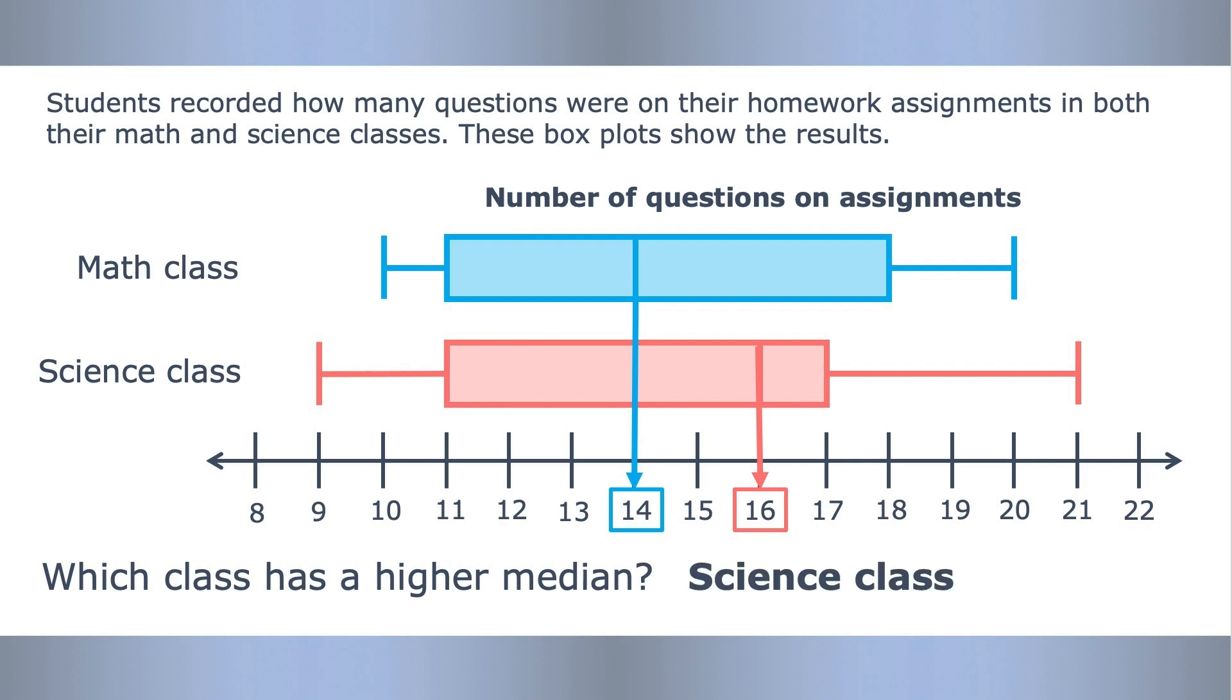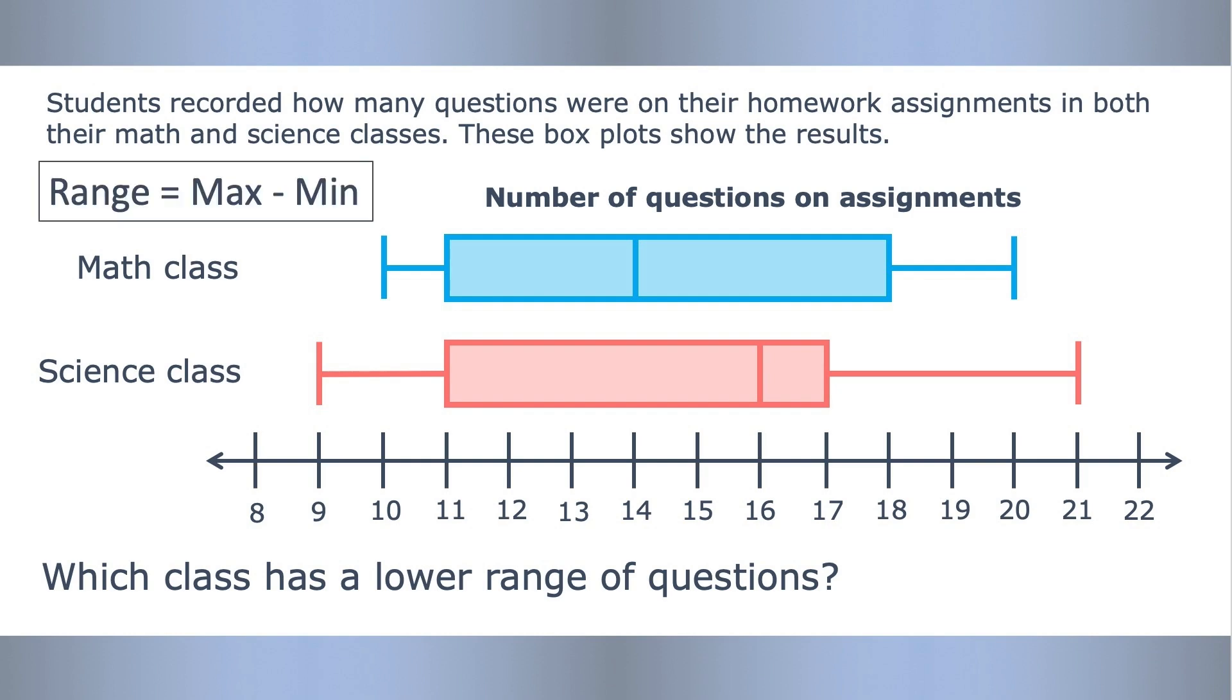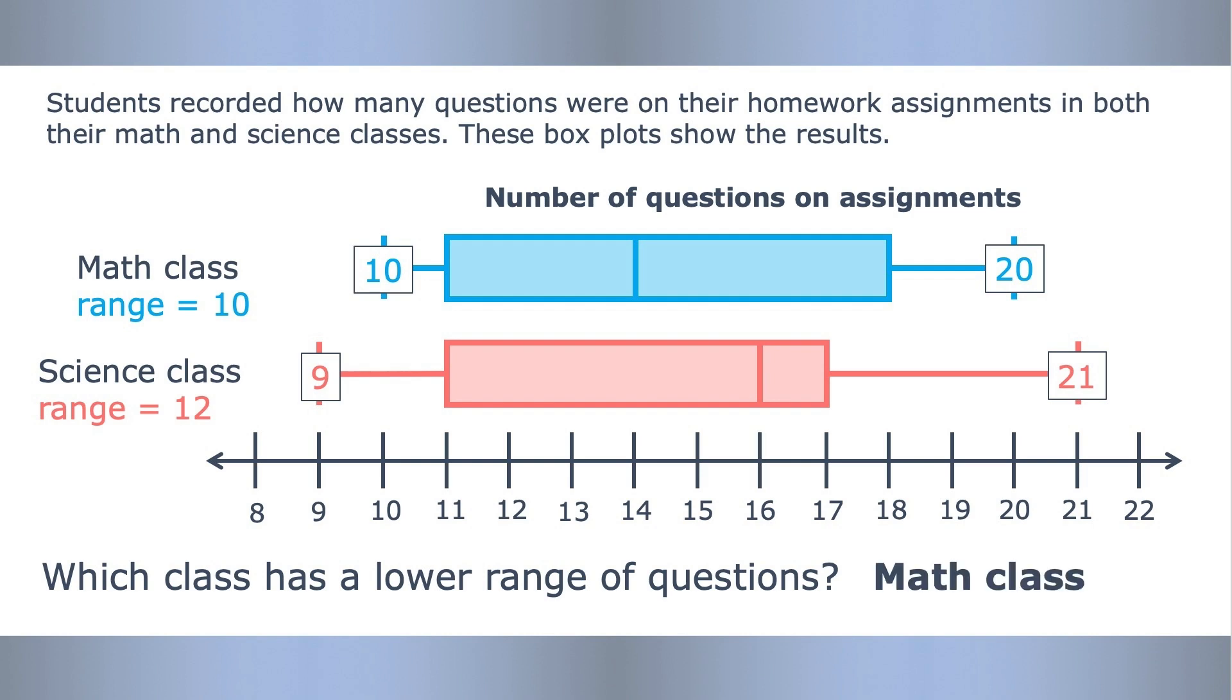Which class has a lower range of questions? Range is maximum minus minimum. The minimum of the math class is 10, the max is 20. If we subtract 20 minus 10, we get 10 for the range. The minimum of the science class is 9, the maximum is 21. If we subtract 21 minus 9, we get 12 for the range. The math class has a lower range, which means the number of questions on math homework varied less compared to the number of questions on science homework.